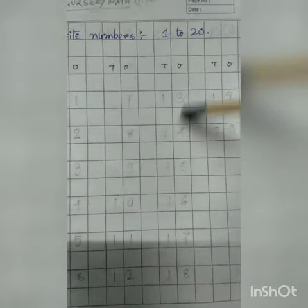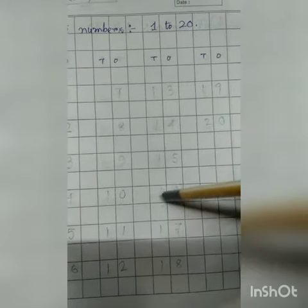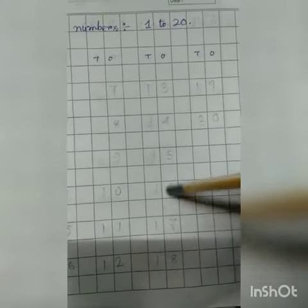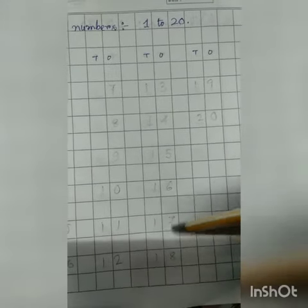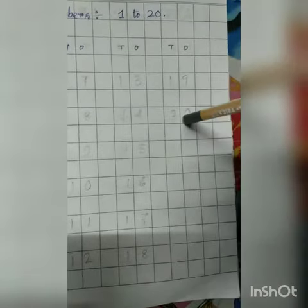Continuing the count: eleven (1, 1), twelve (1, 2), thirteen (1, 3), fourteen (1, 4), fifteen (1, 5), sixteen (1, 6), seventeen (1, 7), eighteen (1, 8), nineteen (1, 9), twenty (2, 0).